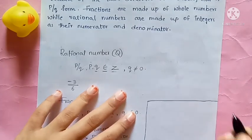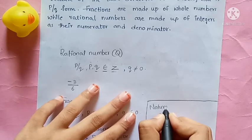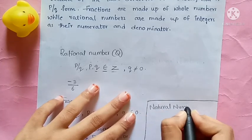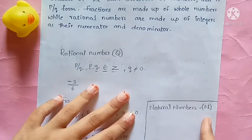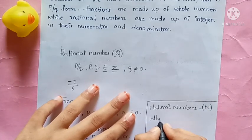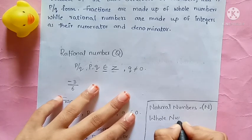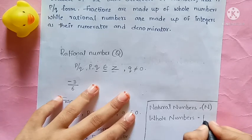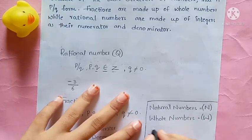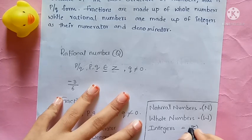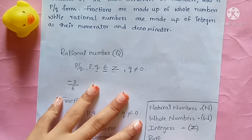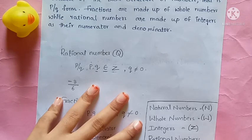Let's recap. Natural numbers are denoted with N. Whole numbers are denoted with W. Integers are denoted with Z. Rational numbers are denoted with Q.